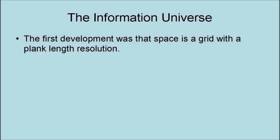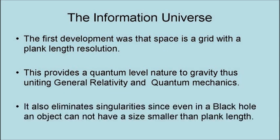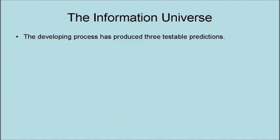The first development was that space is a grid with a Planck-scale resolution. This provides a quantum-level nature to gravity, thus uniting gravity in quantum mechanics. It also eliminates singularities, since even in a black hole, an object cannot have a size smaller than Planck-length. The developing process has produced three testable predictions.